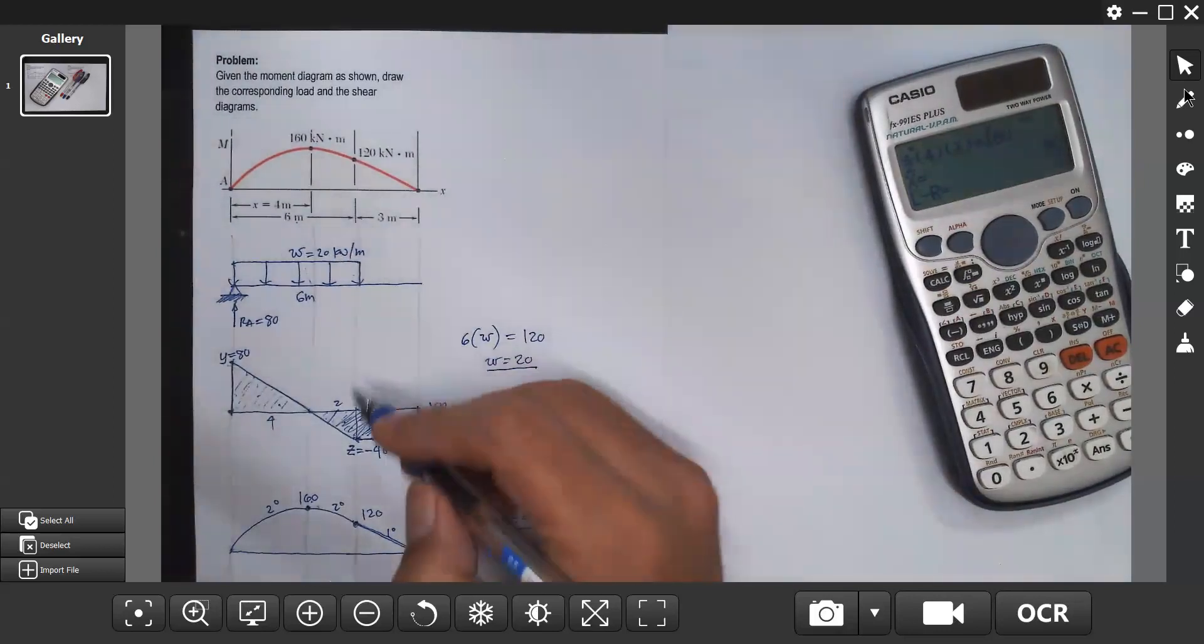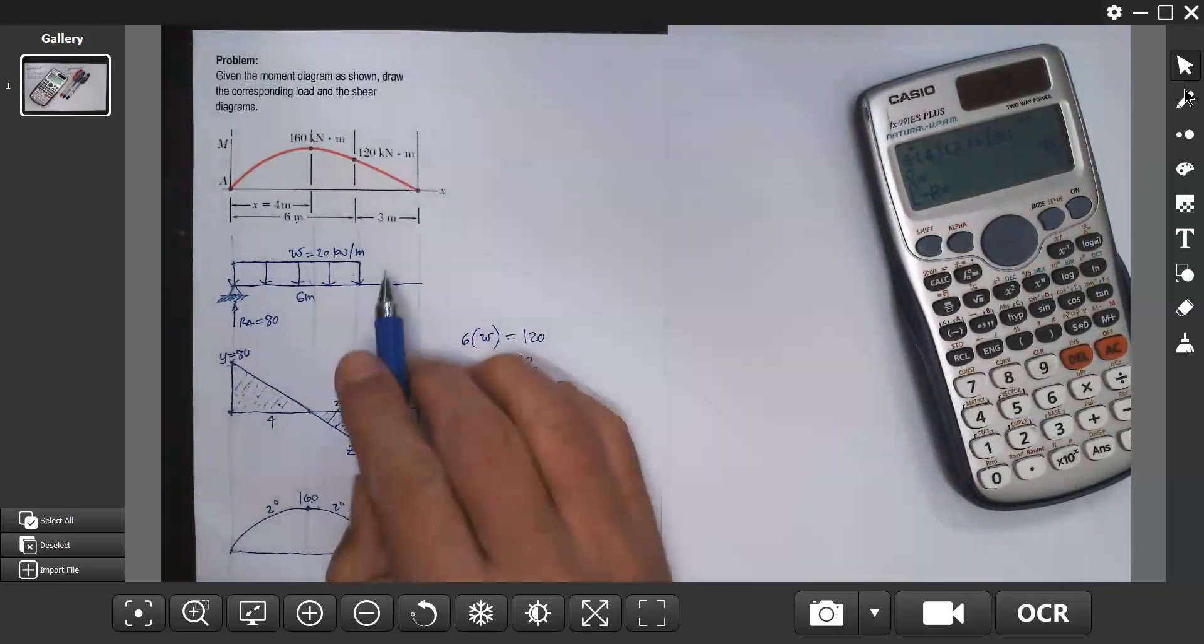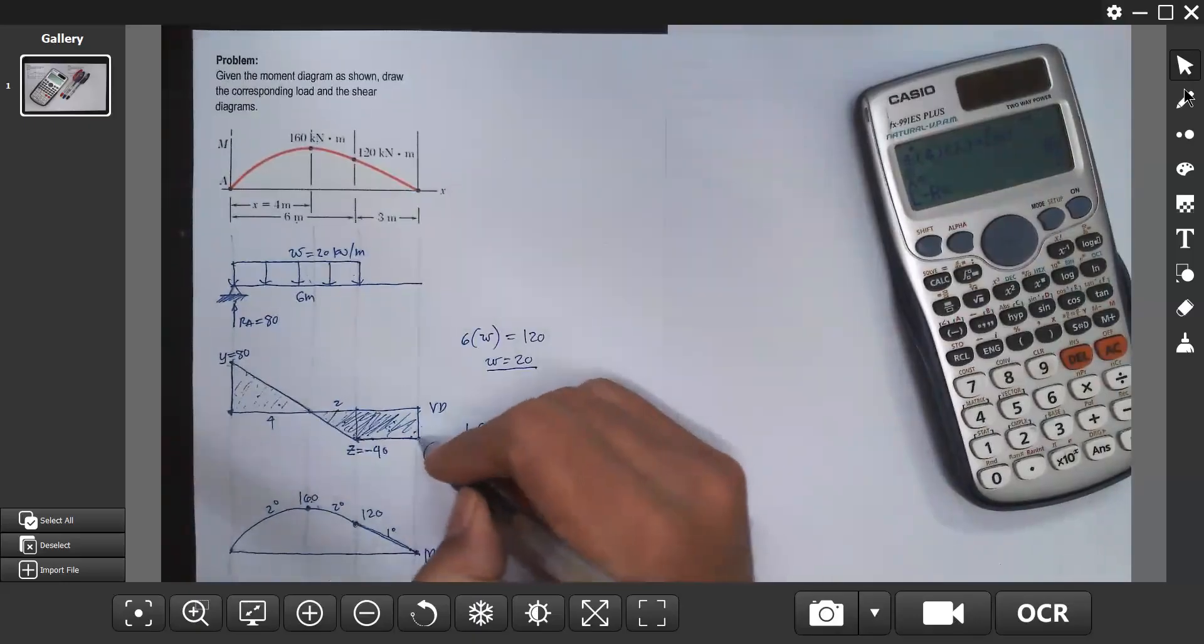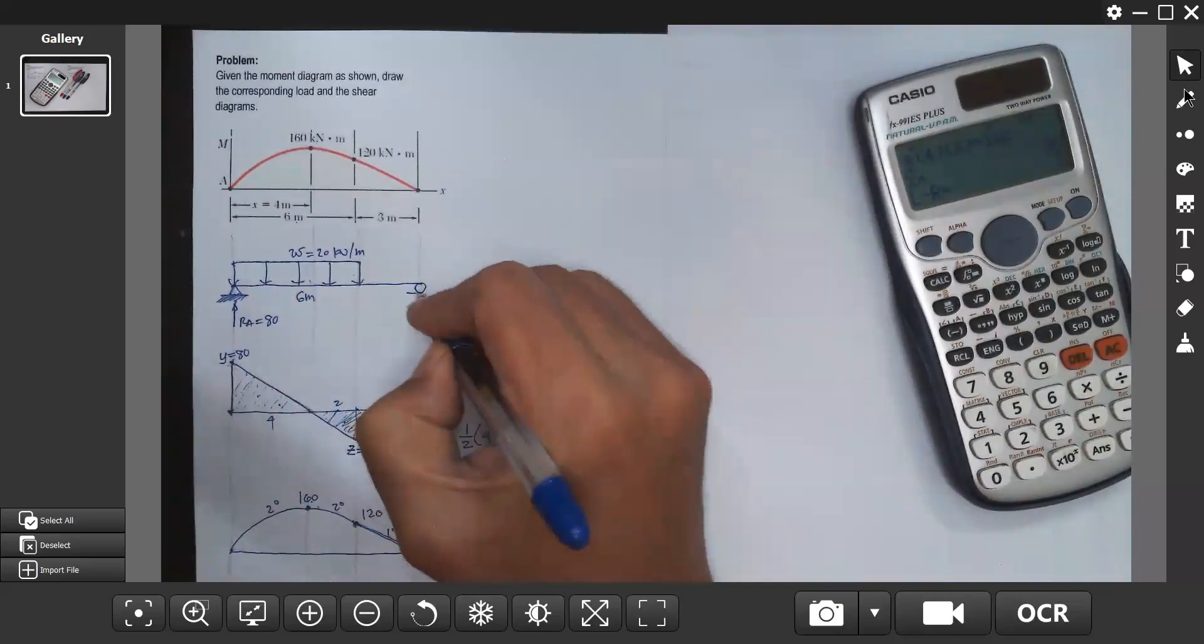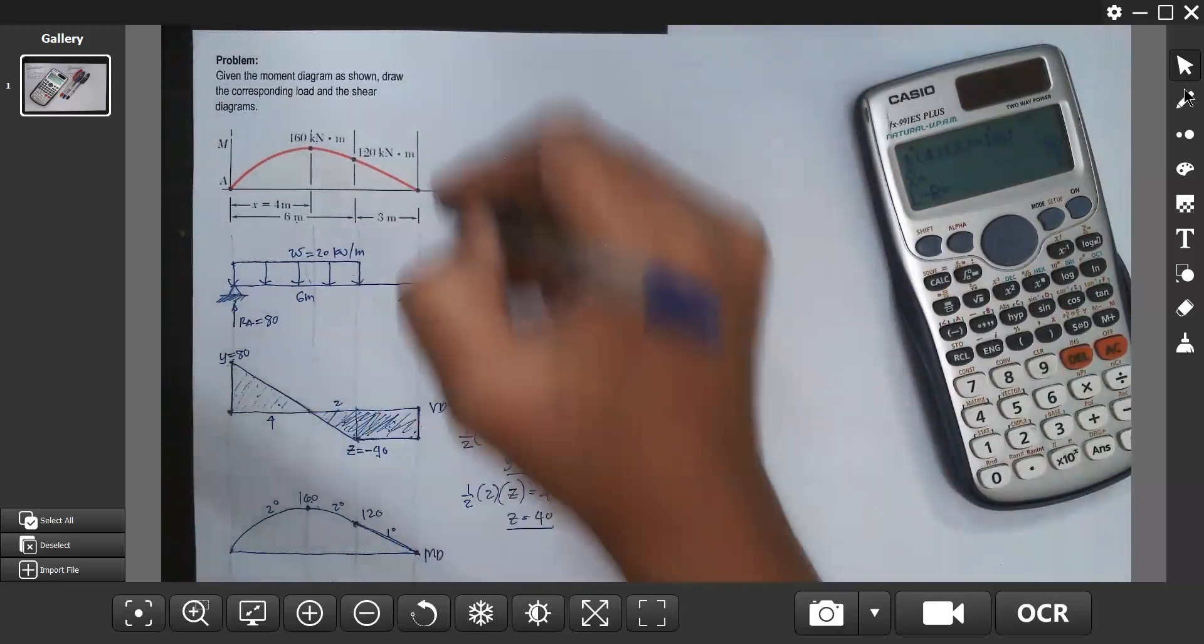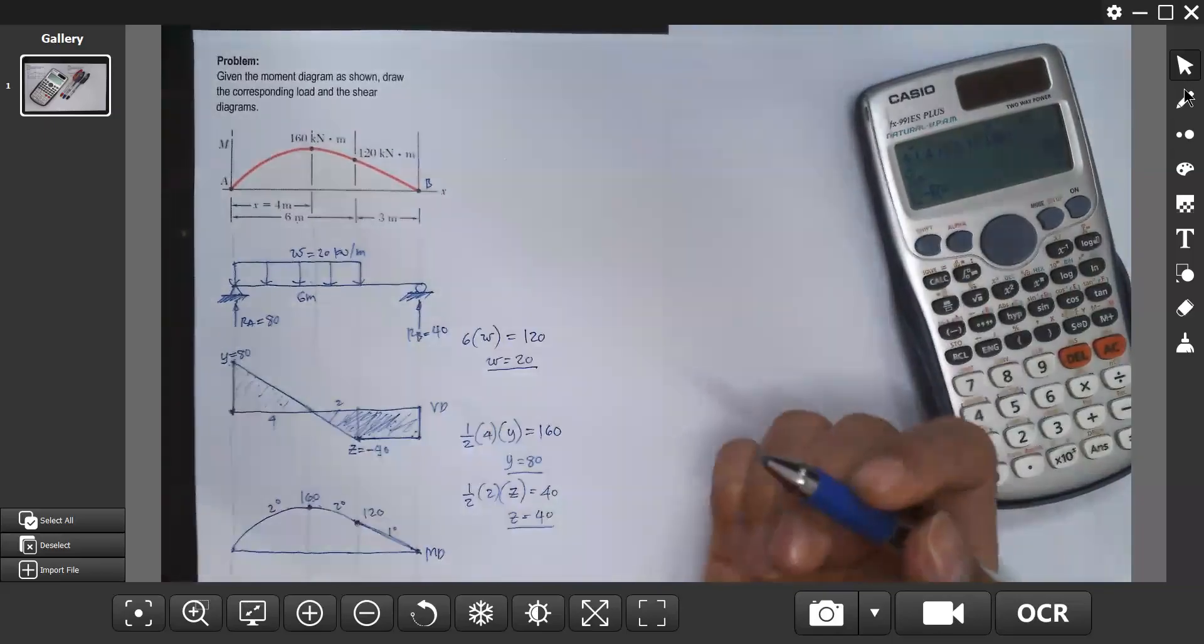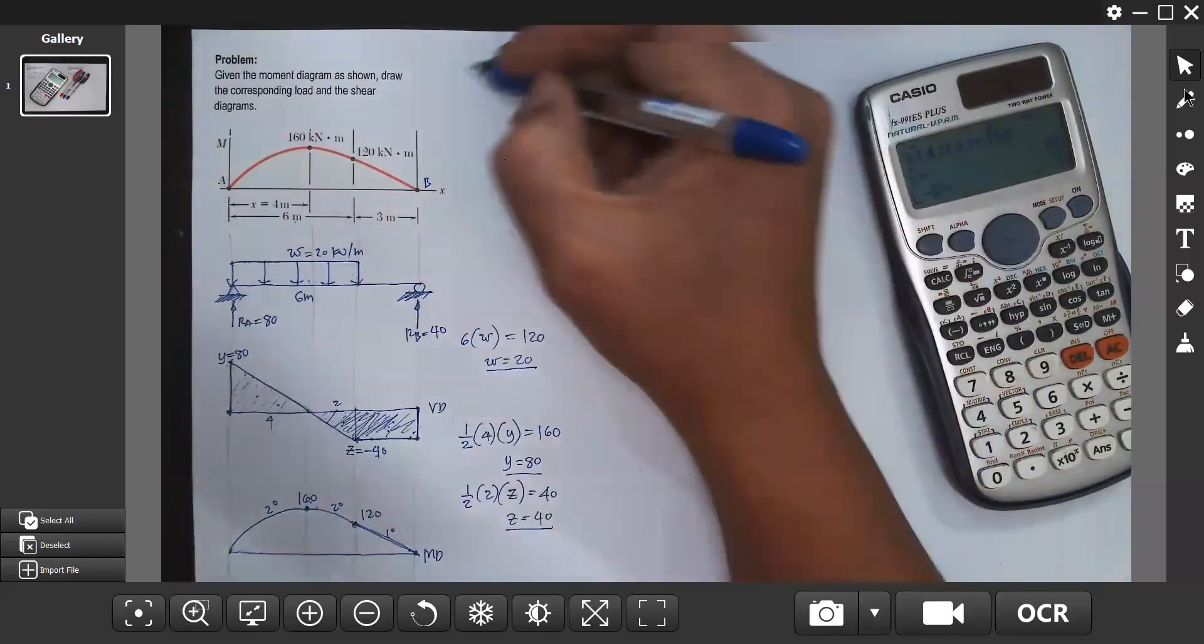Next, the shear diagram is a horizontal line, which means there's no load here. And at this point, it moved upward by 40. So probably it's a reaction. So we have this roller, a hinge and roller. And we have this reaction at point B. RB equals 40. This is our load diagram.